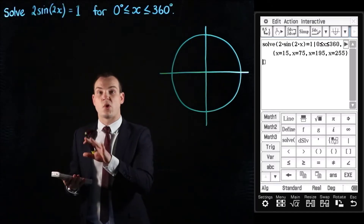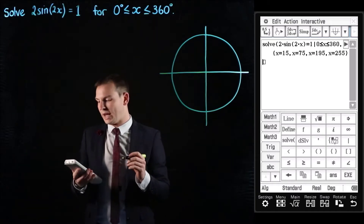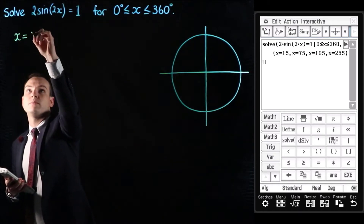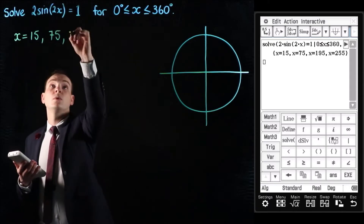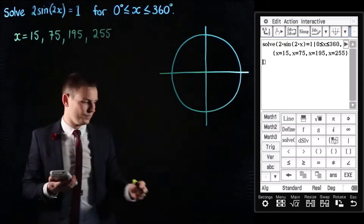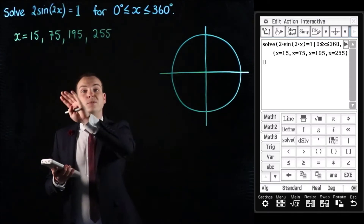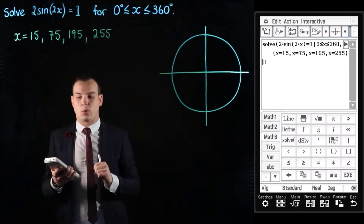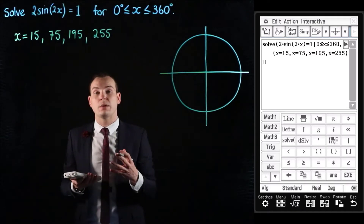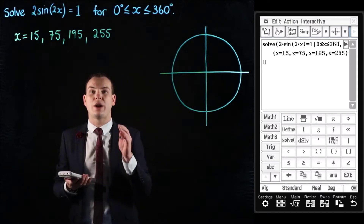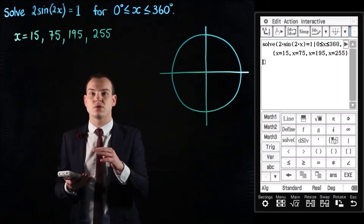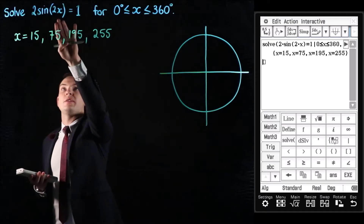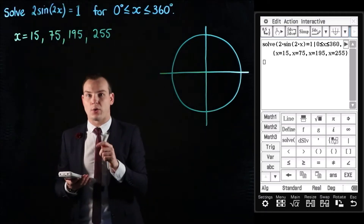So what I'll do now is write those four solutions down so we can refer to them later. Next up, what we're going to do is have a go at understanding or demonstrating what the solution to the equation 2 sine of 2x equals 1 means on a graph.